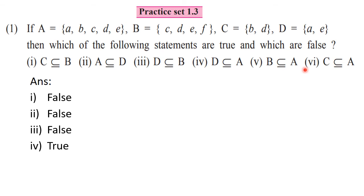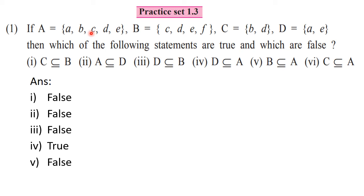Fifth, B is a subset of A — C, D and E are present in both, but F is present in B and not present in A, so it is a false statement. B is not a subset of A. Sixth, C is a subset of A — C is smaller, A is bigger. B is present in both, D is also present in both, so both elements of C are present in A. Therefore C is a subset of A — this is a true statement.